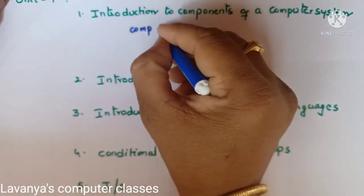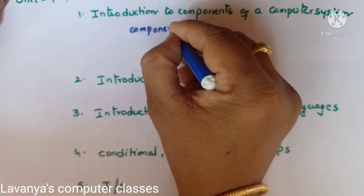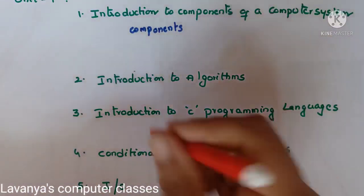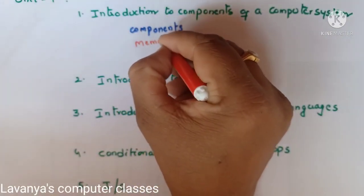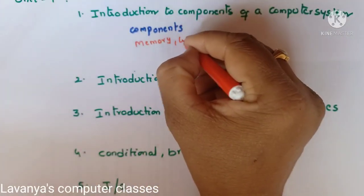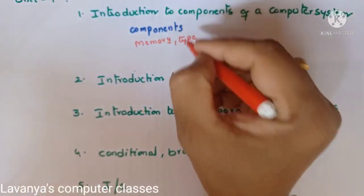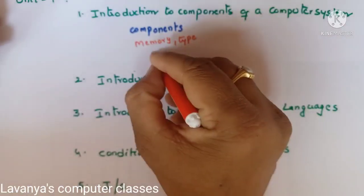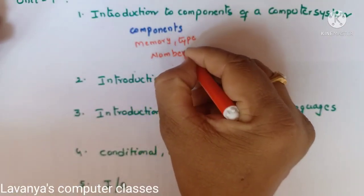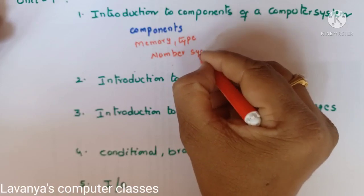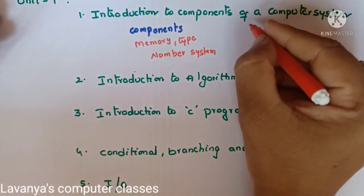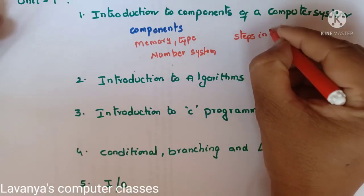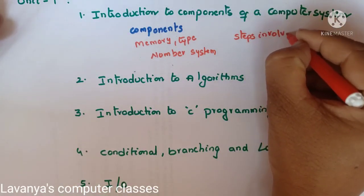What is a computer? Definition of a computer and what are the components of a computer — we have to learn. Then what is memory and types of memory — that is important. A very important question is the number system, converting one number system to another number system with some examples. And steps involved in solving a problem — that is also an important question.